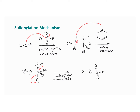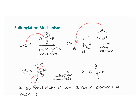Why would you do this? Sulfonylation of an alcohol converts a poor OH⁻ leaving group into a very good RSO3⁻ leaving group — the leaving group is resonance-stabilized when it leaves, making it really excellent.